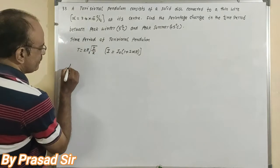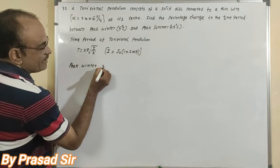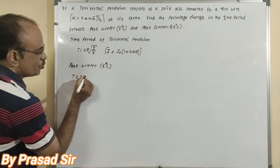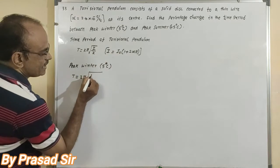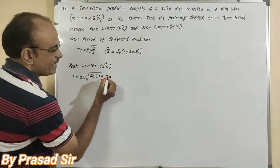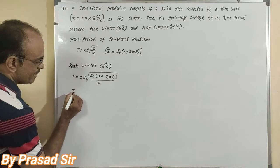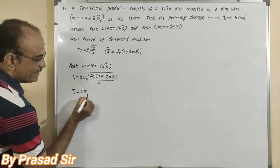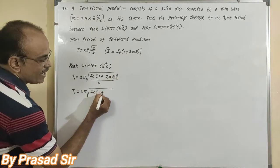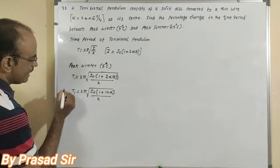In peak winter, the temperature given is 5 degrees centigrade. So T1 is equal to 2 pi times square root over I naught times 1 plus 2 into alpha into 5, divided by k. That means T1 is equal to 2 pi times square root over I naught times 1 plus 10 alpha, divided by k.